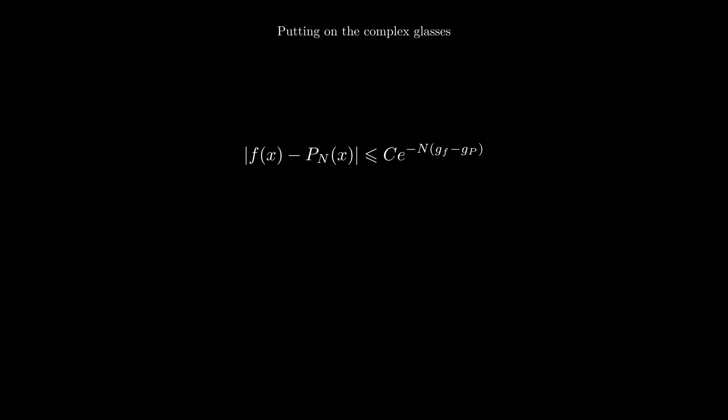n is the order of the interpolant, and c is some constant. We see if G sub f is greater than G sub p, we have convergence. Otherwise, the interpolant diverges from the true function. While time constraints prohibit a proof, a key element is that interpolation of analytic functions can be expressed as a contour integral.